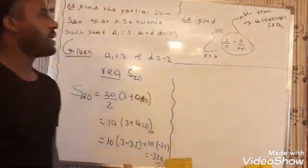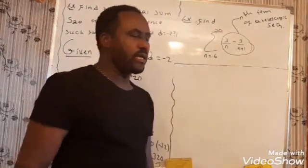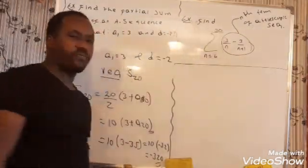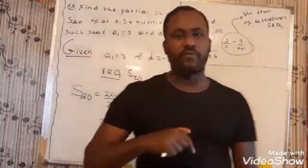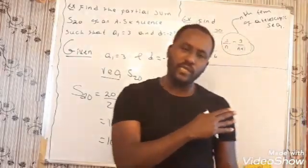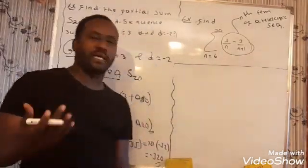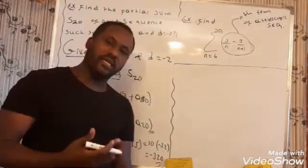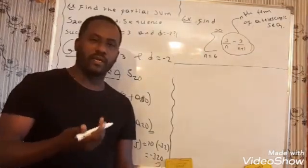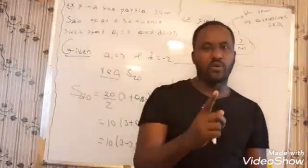In order to determine the partial sum of this problem, first you have to know how many terms will be added. You have to know the number of terms that will be added on this problem, and then you can find the partial sum. You can refer to previous videos for the full procedure. But let me show you a simple trick to find the answer within two seconds.